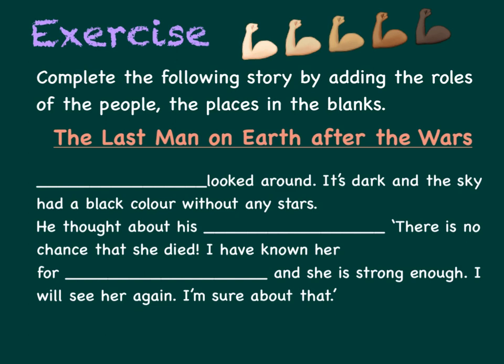Now do the exercise to test yourself. There are two pages of the exercise. Complete the following story by adding the roles of the people and the places in the blanks. You can stop the video for a while to do the exercise. Play the video to check the answers when you finish.